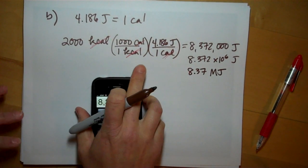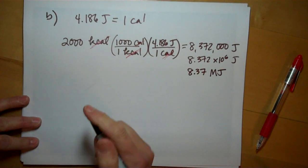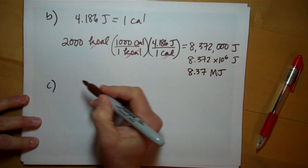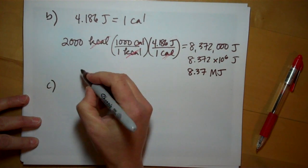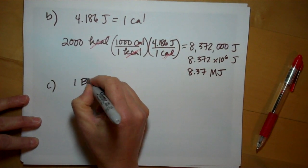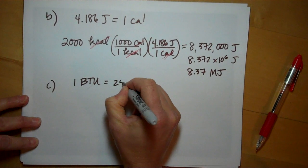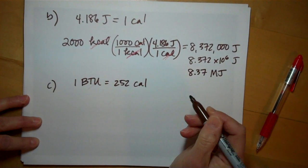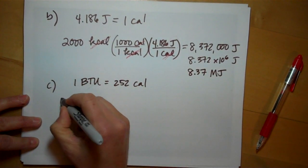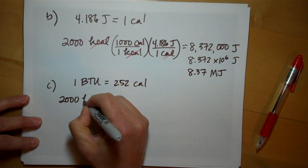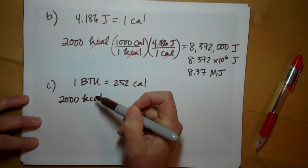Part C wants you to convert your number to BTUs. We know that one BTU is 252 calories. So again, writing what you're given.